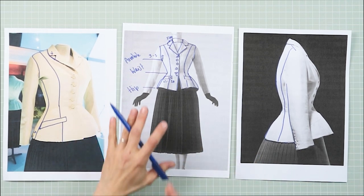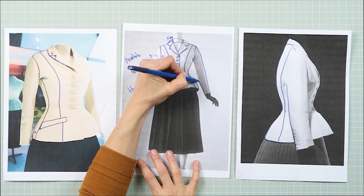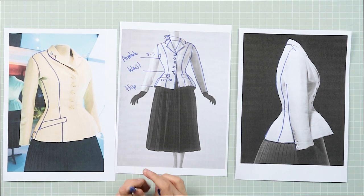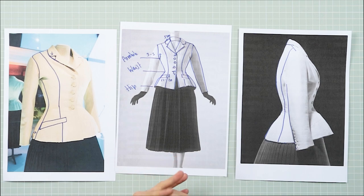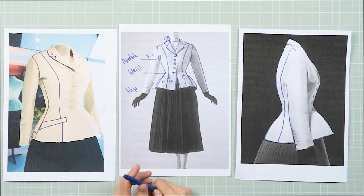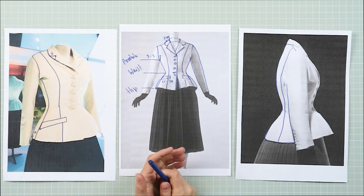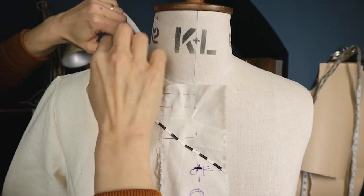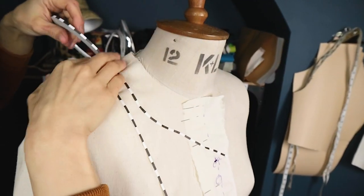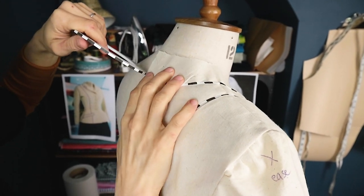I've drawn my garment, done the rough measurements, and got an idea of how it's going to look. What I'm going to do next is cut out my front basic bodice, back basic bodice, and sleeve out of calico, put it on the stand, and then use tape to draw my different lines — the collar, the button stand — to help me work out how it's going to look. Thanks for watching. In the next video I'll show you how to drape your design on the mannequin, so make sure you click on the link for part two.